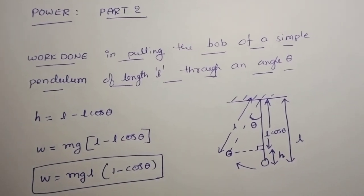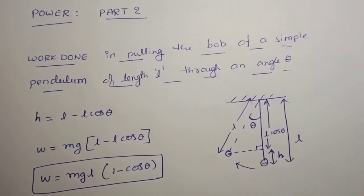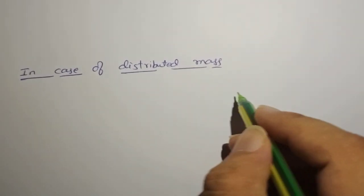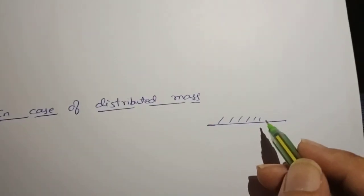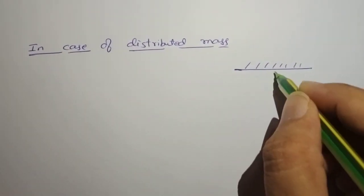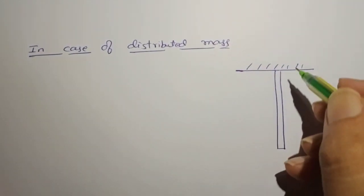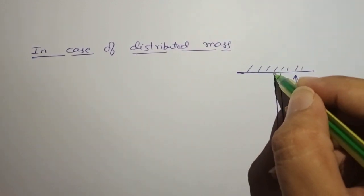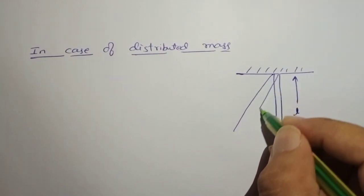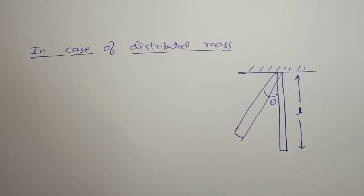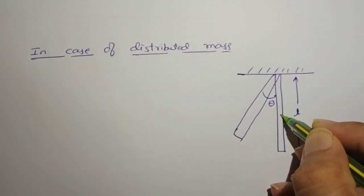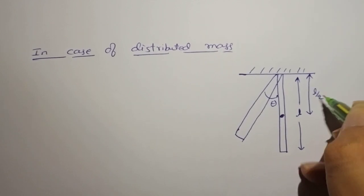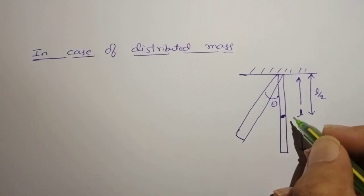Now what if the mass is distributed? In the previous case, mass was there only in the bob. For example, if we take a metal bar of some length — in case of a distributed mass — the mass is distributed throughout the bar, and the length of the bar is L. I can treat this distributed mass as a point mass situated at the center of this bar, so the center of mass is at L by 2.